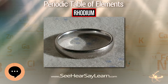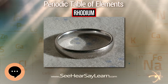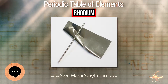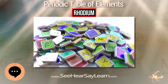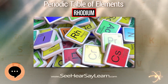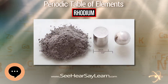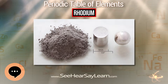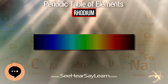Rhodium is preferable to the other platinum metals in the reduction of nitrogen oxides to nitrogen and oxygen. Rhodium catalysts are used in a number of industrial processes, notably in the catalytic carbonylation of methanol to produce acetic acid by the Monsanto process. It is also used to catalyze addition of hydrosilanes to molecular double bonds, a process important in the manufacture of certain silicone rubbers.